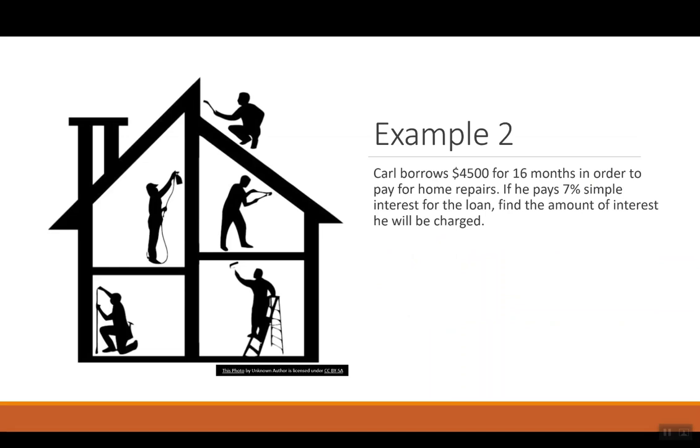Let's try again. In this example, Carl borrowed $4,500 for 16 months in order to pay for home repairs. He pays 7% simple interest for the loan, and we want to find the amount of interest he will be charged. So P, the amount we're borrowing, is $4,500. The interest rate R, 7%, is 0.07. And once again, we have time given in months, so we want to change that over to years. So 16 over 12 can be reduced to 4 over 3. You do not have to reduce it if you don't want to. So to figure out the interest, I have my 4,500 times 0.07 times 4 over 3, and that gives $420 that will be paid in interest for this loan.